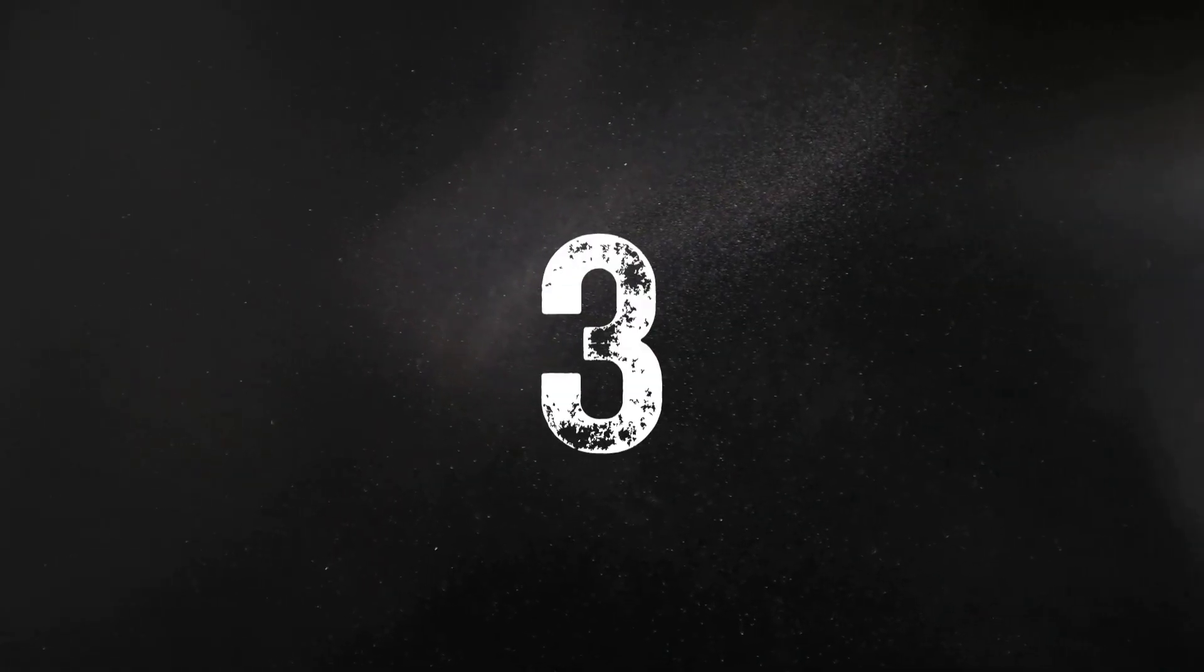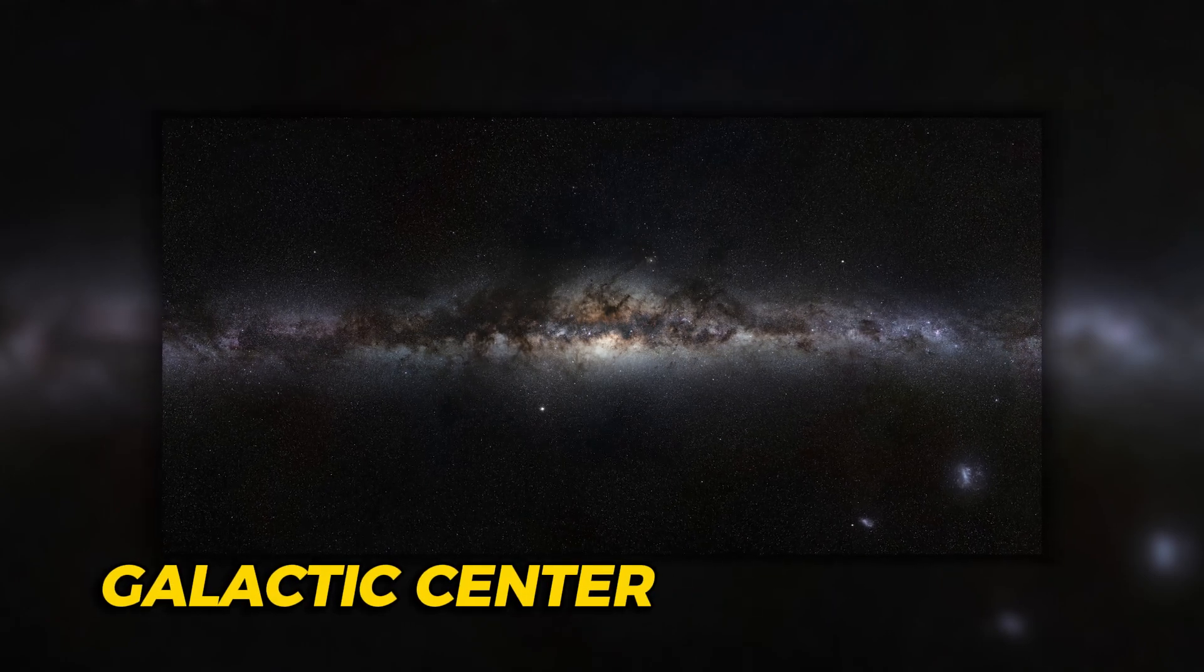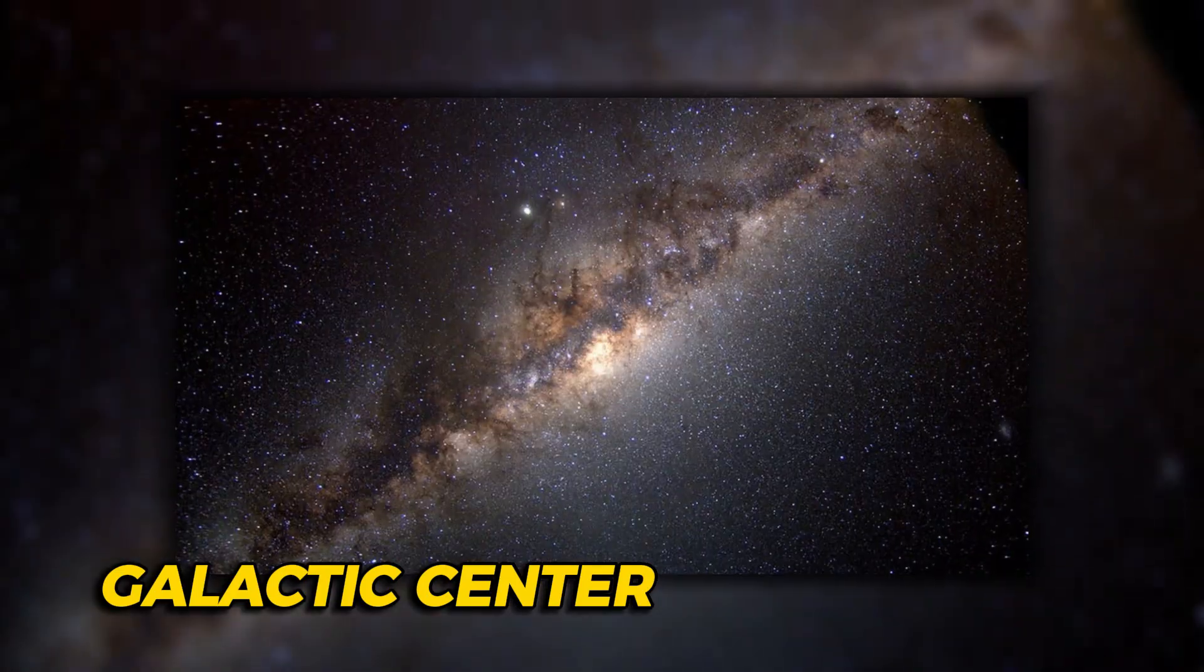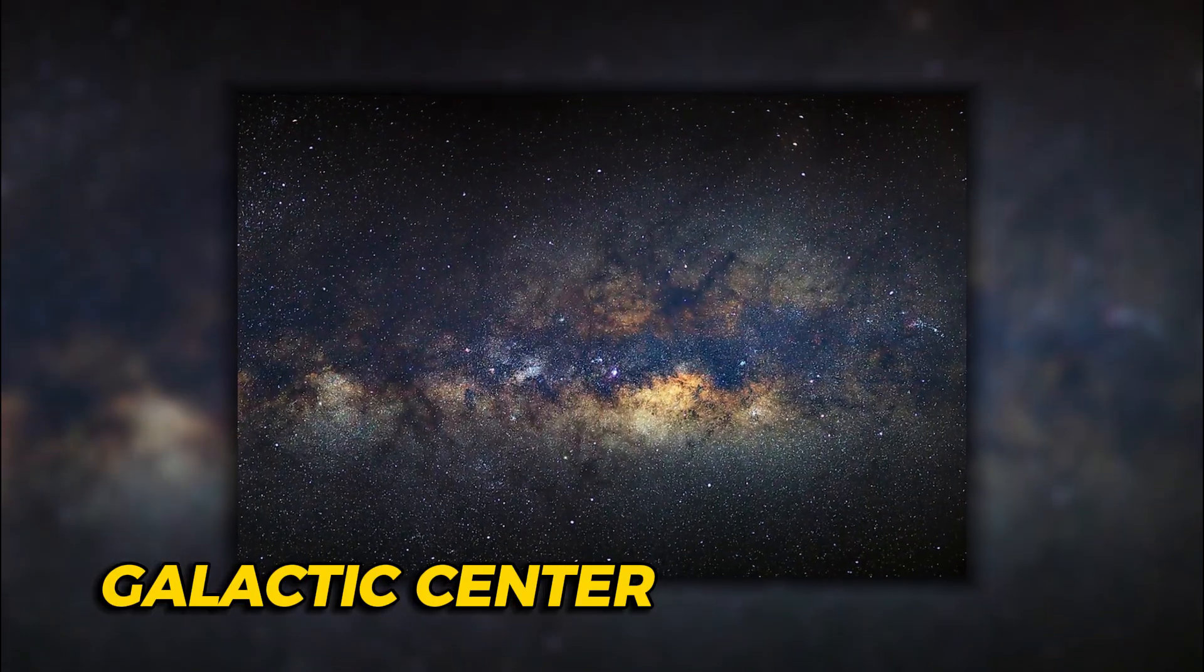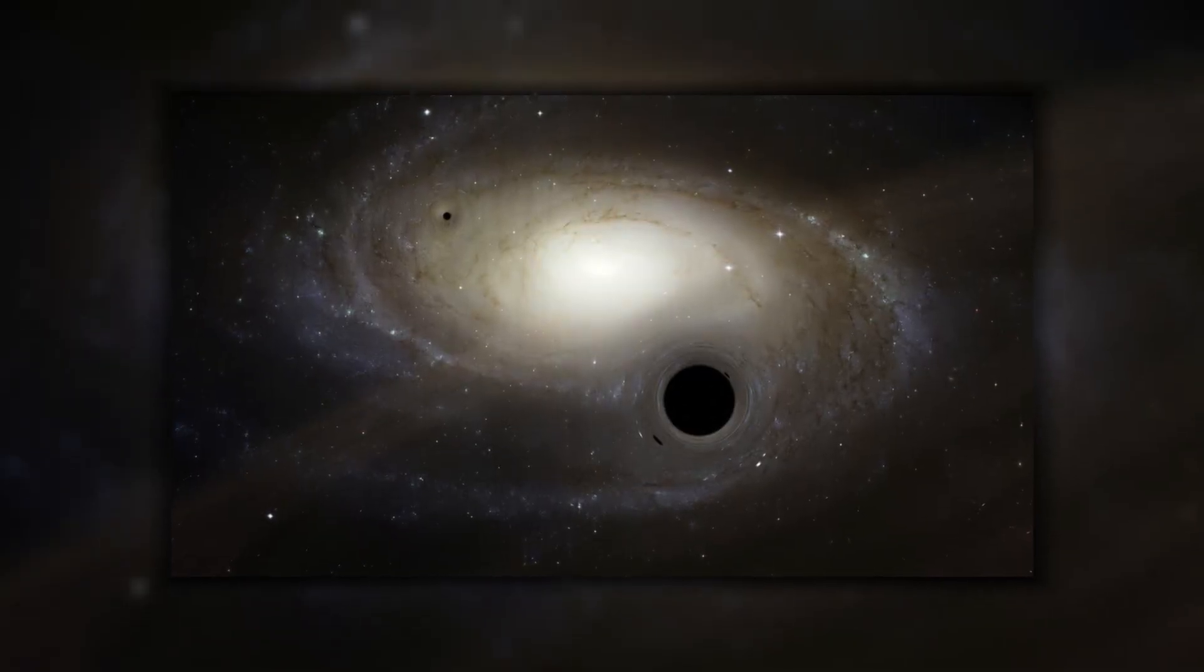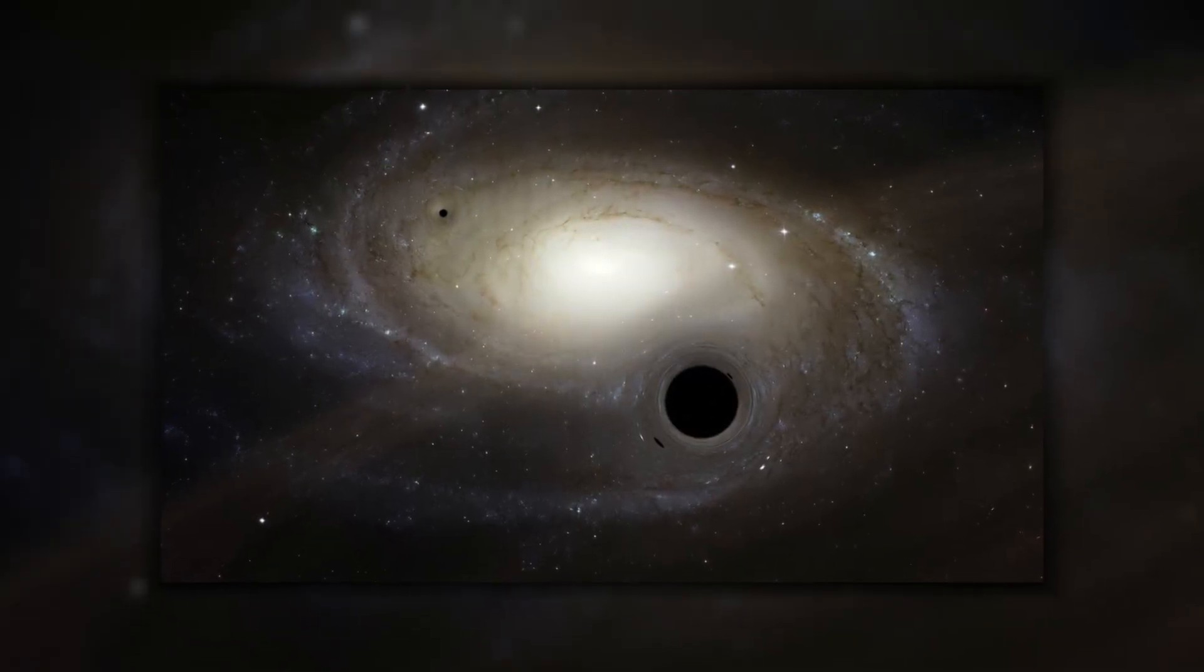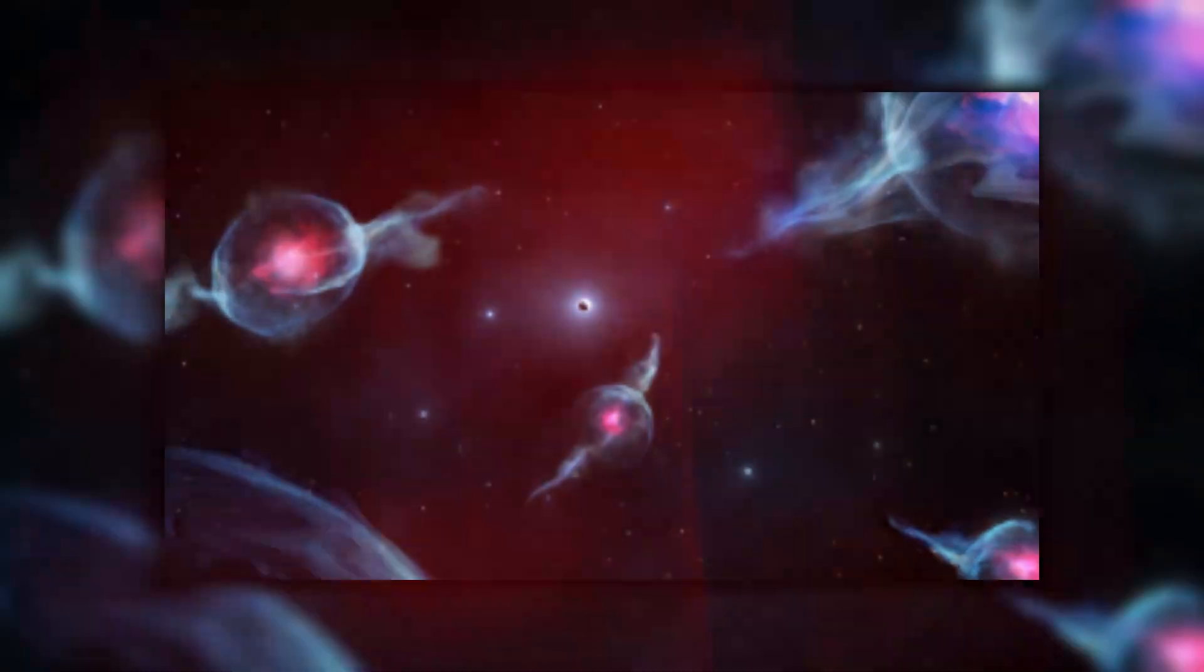The Galactic Center is a mysterious place. It's obscured by dust and cloud, making it difficult to observe. It's also a very dynamic and violent environment, home to a supermassive black hole and a variety of strange and unusual objects and phenomena, such as mysterious filaments, G-objects, and mini-spirals.